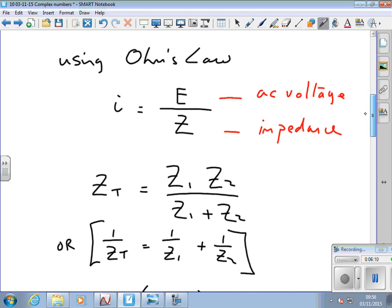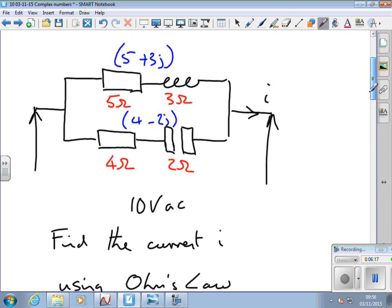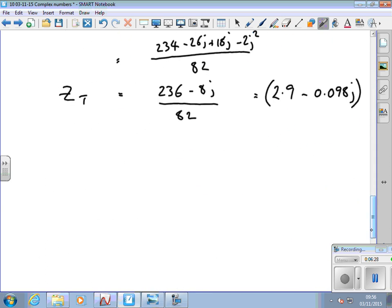So now we go back and we've got to work out what the current is. i equals E over Z. So looking back at the problem, the original problem, the voltage in the supply is 10 volts. So what we want to do to get the current, E over Z, which equals 10 over 2.9 minus 0.098j.